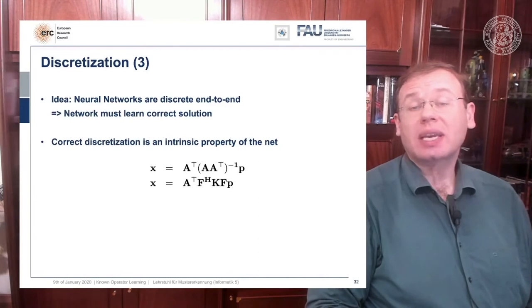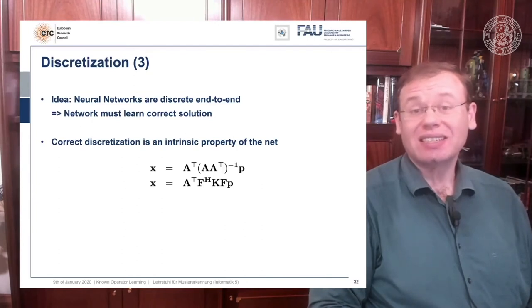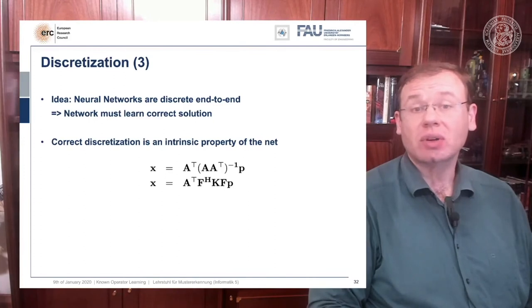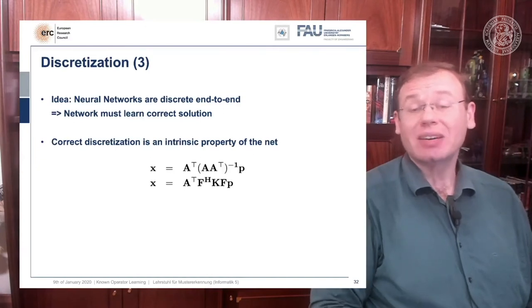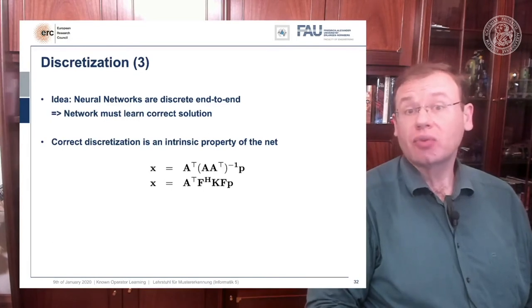You can work with this still and fix the problem in the discretization. So what you can do now is we can essentially train the correct filter. What you would do in a classical CT class is you would run through all the math from the continuous integral to the discrete version in order to figure out the correct filter coefficients.